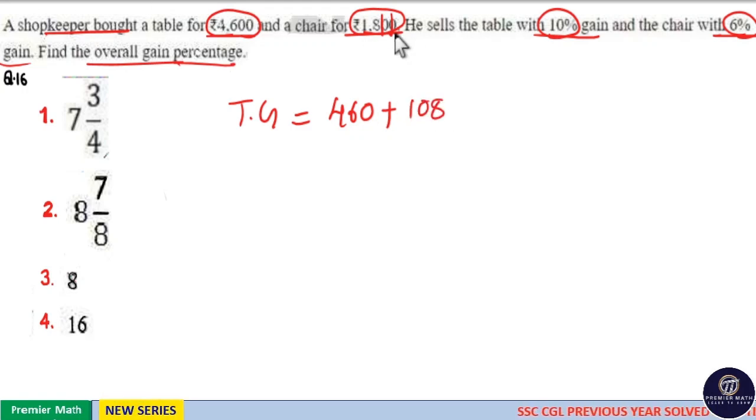Now, total gain is equal to 460 plus 108. 560 plus 8 equals 568.